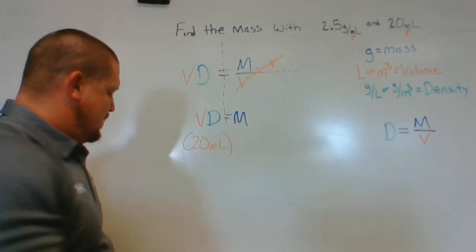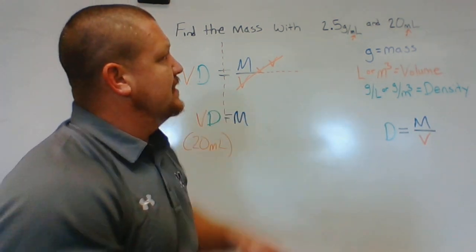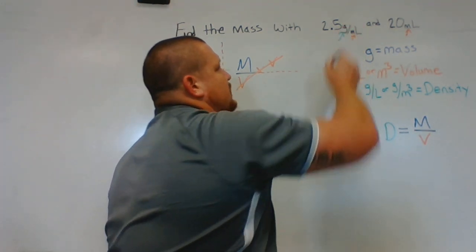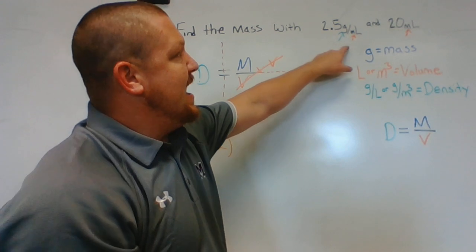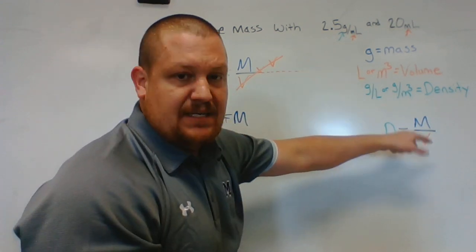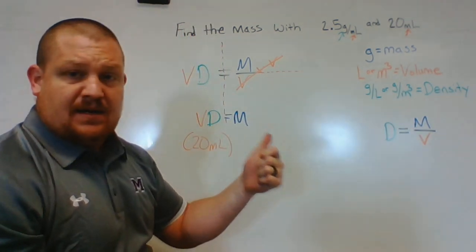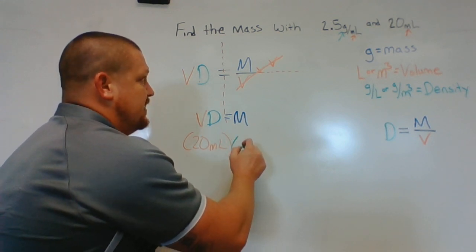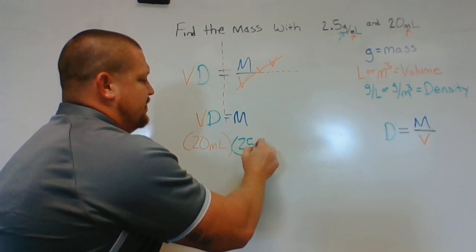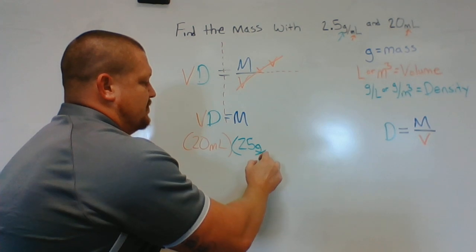Now we need our density. So this here, it has a mass unit and it has a volume unit, just like our density formula. So we know, hey, there's our density number right there. We're going to plug it in right here for this D: 2.5 grams per mill.